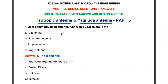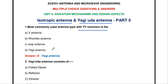The first question: which is the most commonly used antenna with TV receivers? The four choices are V antenna, rhombic antenna, loop antenna, and Yagi antenna. The Yagi antenna is the correct answer — it is used for TV receiver applications.